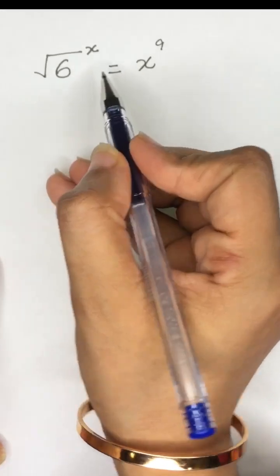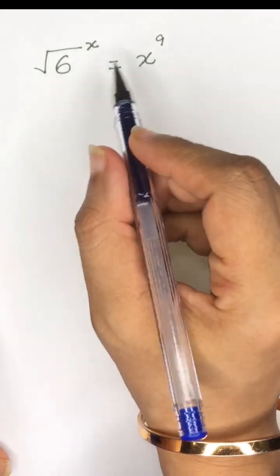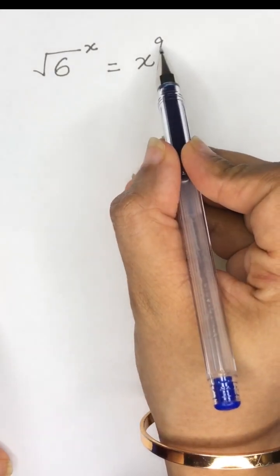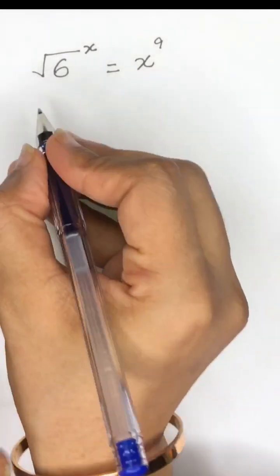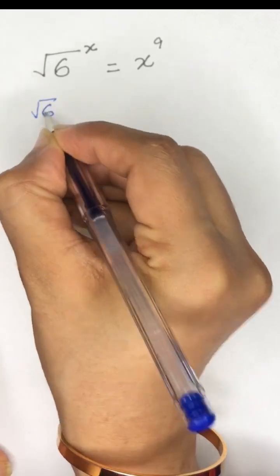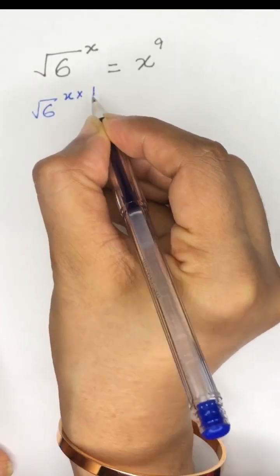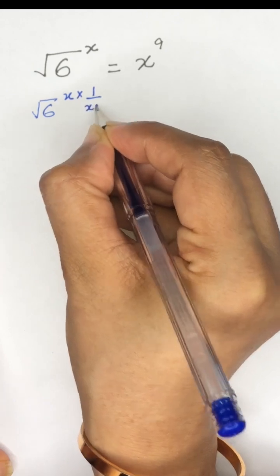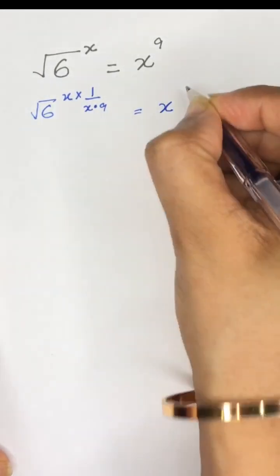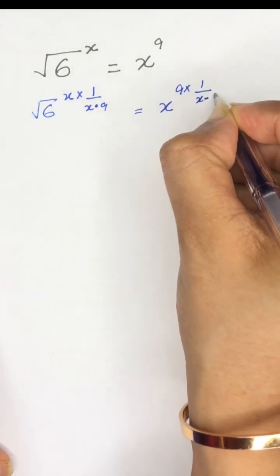Square root of 6 to the power x is equal to x to the power 9. We will multiply the power 1 divided by (x times 9) on both sides. So it will become: square root of 6 to the power x, multiplied by 1 divided by (x times 9), is equal to x to the power 9, multiplied by 1 divided by (x times 9).